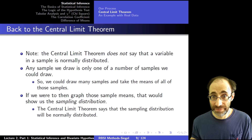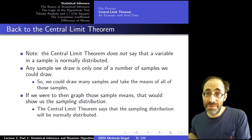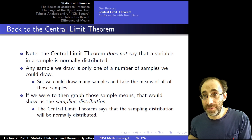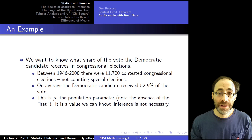We take hundreds or thousands of samples from the same population, plot all those sample means on a plot, and the distribution we get from those sample means is going to be a normal distribution. That is key, and that's what the central limit theorem says: as I take bigger and bigger samples, the distribution of sample means I get will approach a normal distribution.